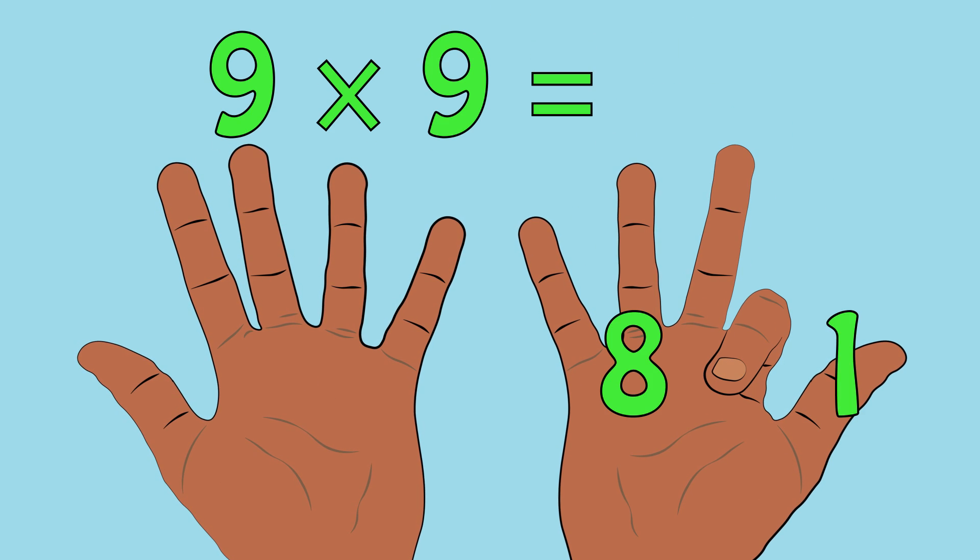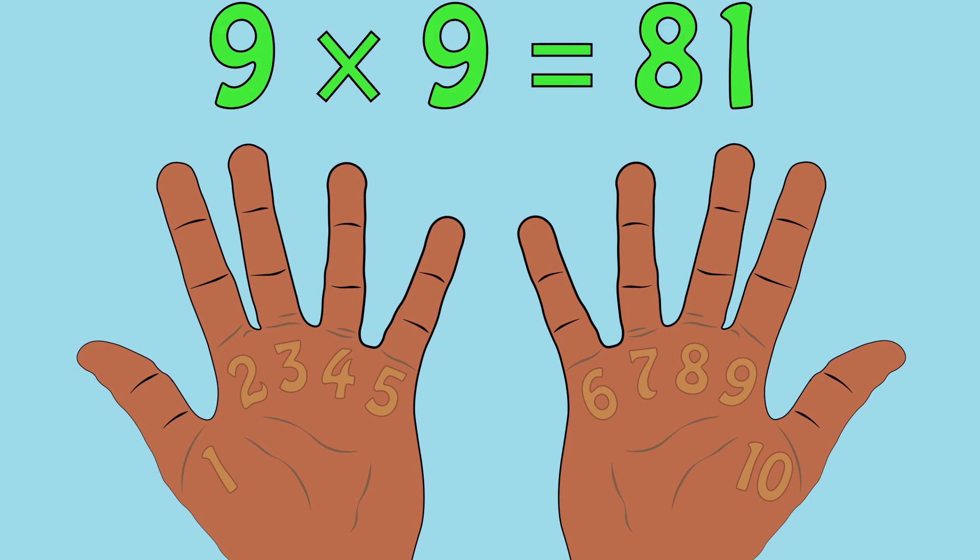9 times 9 equals 81. And finally, 9 times 10 equals 90.